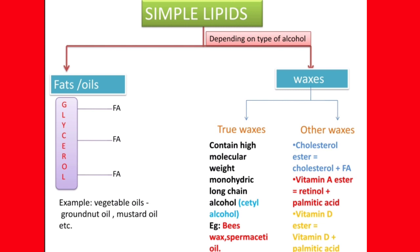Coming to the second class of simple lipids, that is waxes. Waxes are classified into true waxes and other waxes. True waxes contain alcohol other than glycerol — that means they do not contain glycerol. The alcohol present in waxes is mostly a high molecular weight monohydric long-chain alcohol, containing one hydroxyl group. That is why it is called a monohydric alcohol.